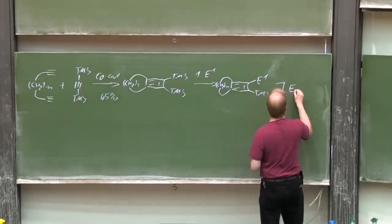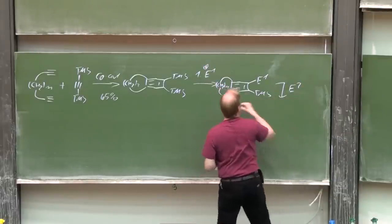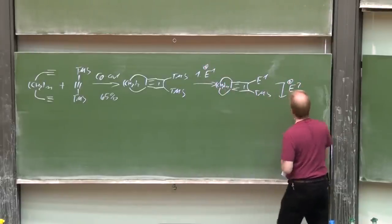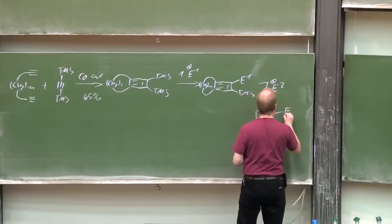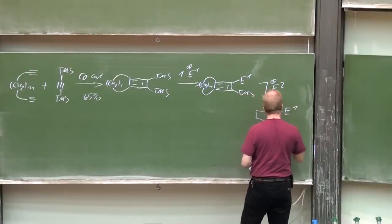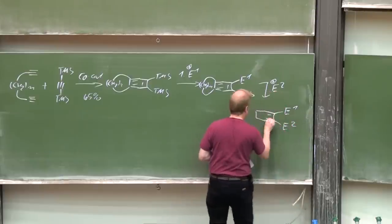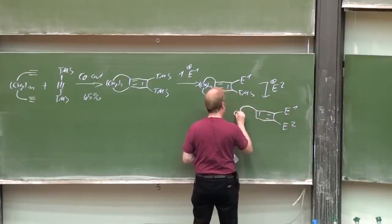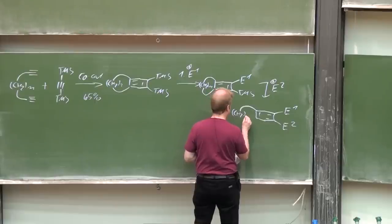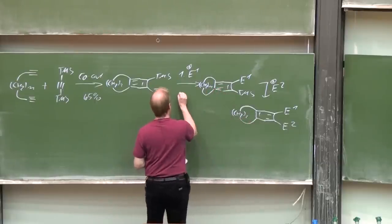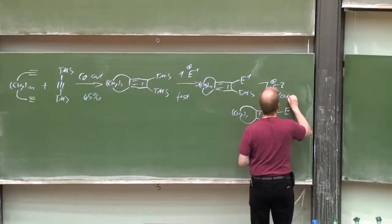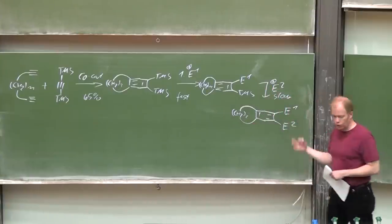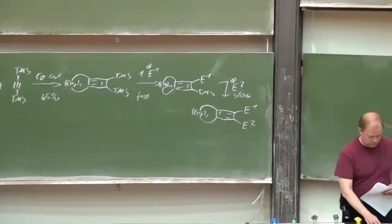Next step then, the second electrophile. And you have then two different functionalities introduced. This one is fast. This step usually is 40 times slower than the first one.